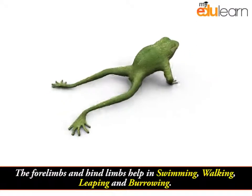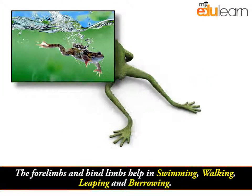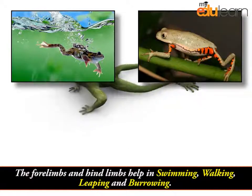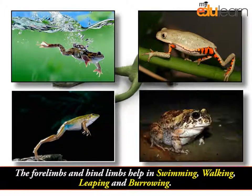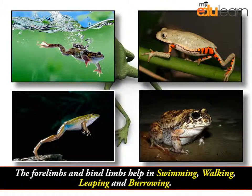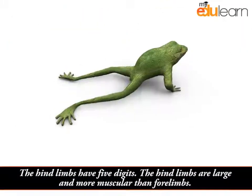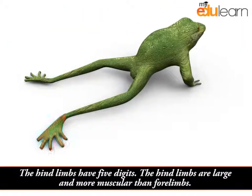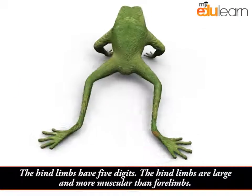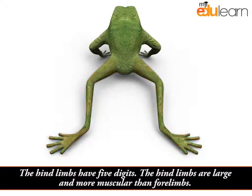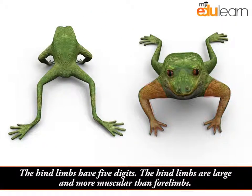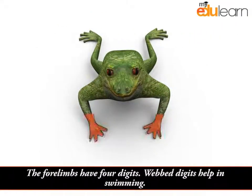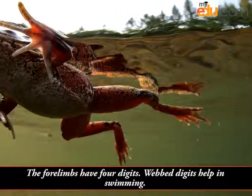The forelimbs and hindlimbs help in swimming, walking, leaping, and burrowing. The hindlimbs have five digits and are large and more muscular than forelimbs. The forelimbs have four digits. Webbed digits help in swimming.